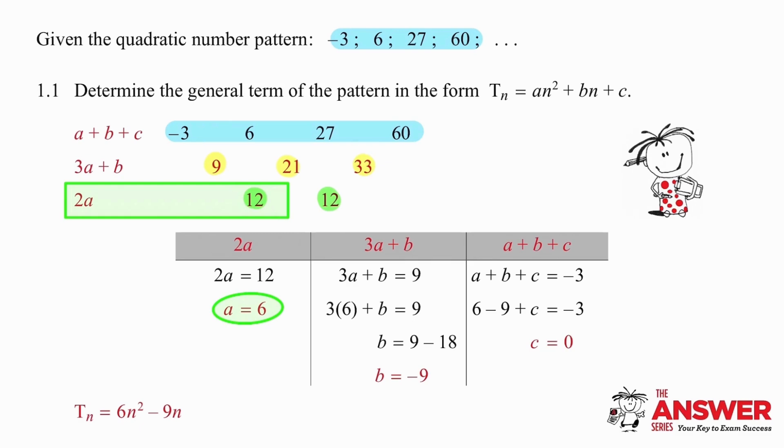We simply take 2a and make that equal to 12, and using that we solve for a equal to 6. Then we move on. We take that result and take the first first difference and equate that now to 3a plus b equal to 9, and using our value which we've substituted from a equal to 6, we can work out that b is equal to minus 9.